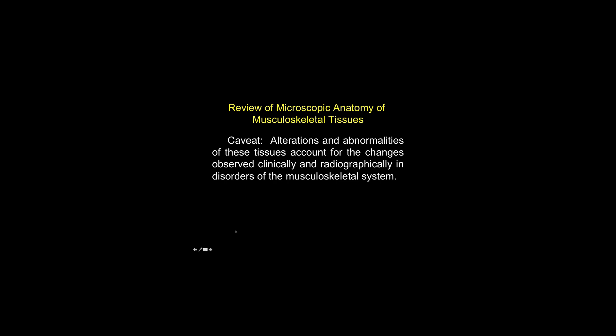This concludes a brief overview of the histologic features of the most important tissues that make up the musculoskeletal system. Alterations and abnormalities of these tissues account for the changes observed clinically and radiographically in disorders of the musculoskeletal system. This brief introduction of the normal MSK tissue microscopic anatomy will hopefully give you a basis to begin to correlate pathologic changes of the various MSK disorders with their important clinical and radiologic manifestations. Thank you.